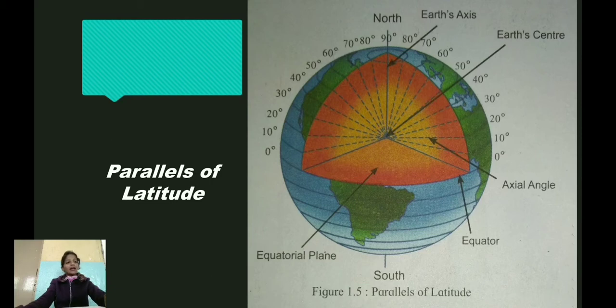You can see an image of parallels of latitude on your screen. The values of parallels are angular measures expressed in degrees. The degrees of parallels are measured from the equator as shown in the figure, and that is why the equator is considered as 0 degree parallel. It is the largest parallel and also a great circle. The angular distance of other parallels towards north and south poles goes on increasing away from the equator.